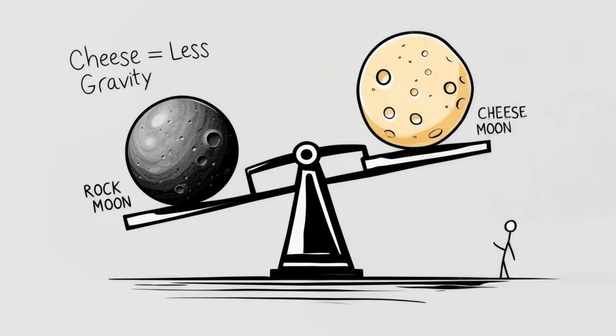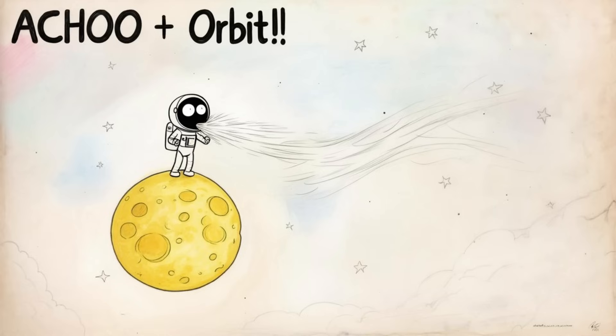So, astronauts visiting the cheese moon would bounce around like over-caffeinated rubber balls. They'd also find it harder to stay on the surface. A strong sneeze might launch you into lunar orbit. But gravity doesn't just affect astronauts. It affects the Earth, too.